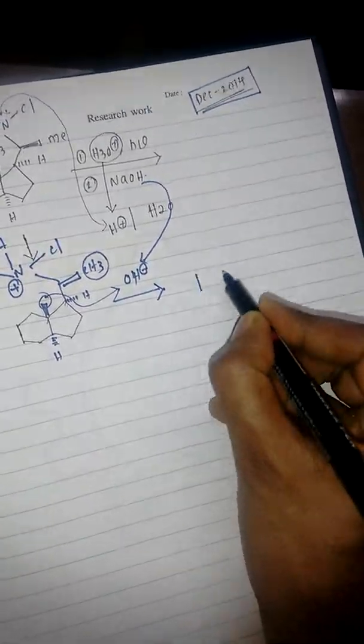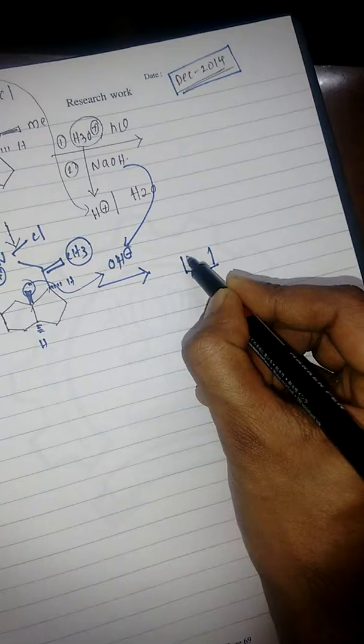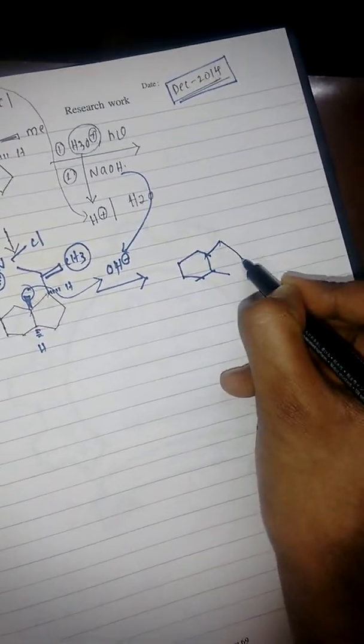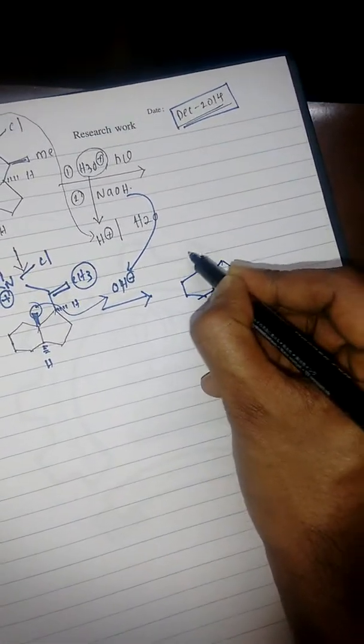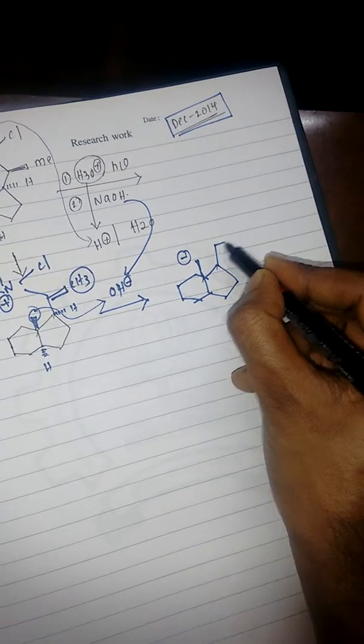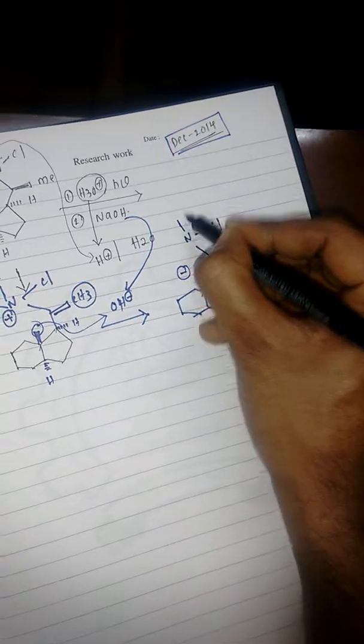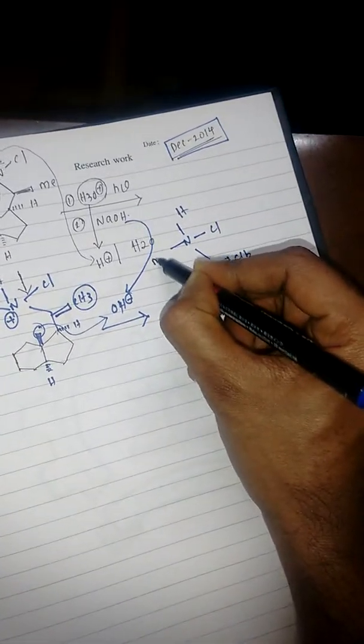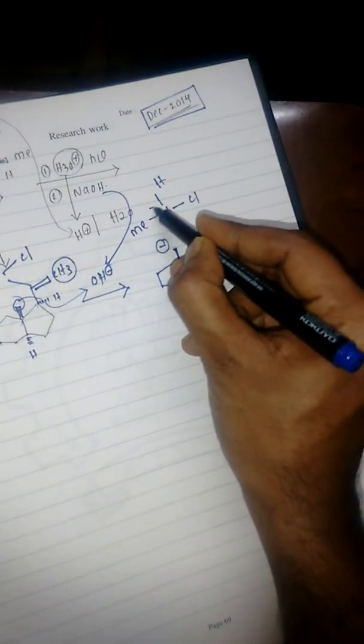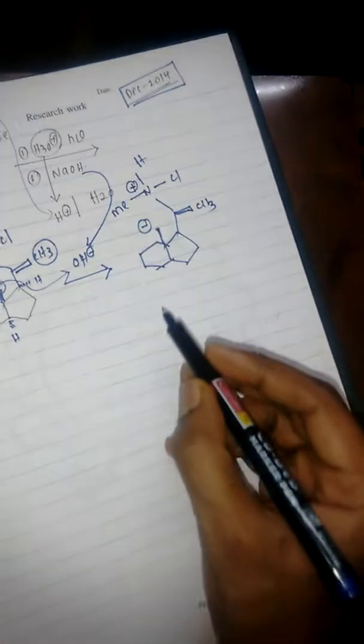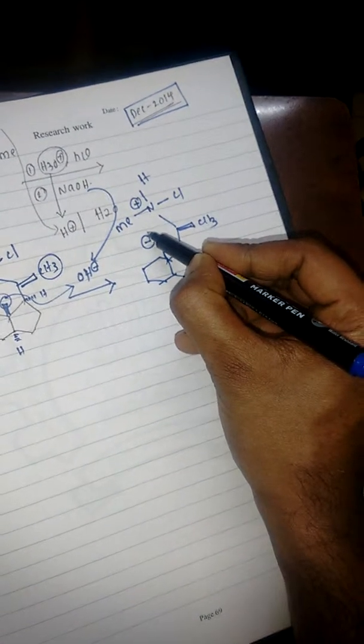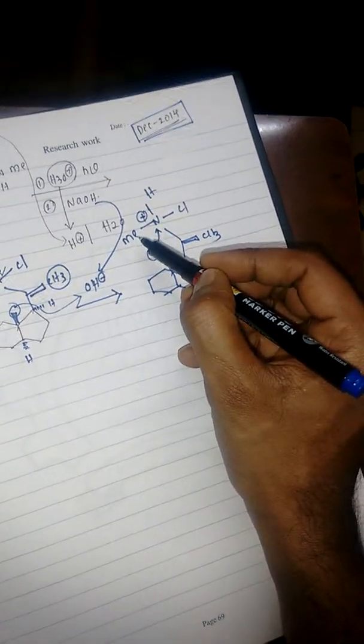So here we will get negative charge on CH2-, with CH3, Cl, H and methyl group. Now here positive charge is there and negative charge is there, and these two will form a bond.